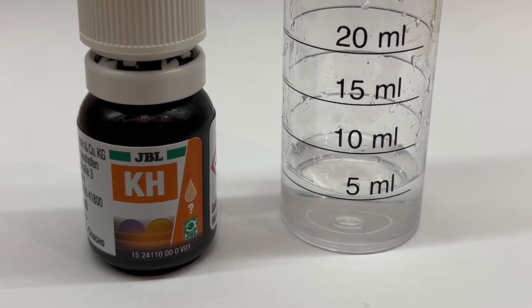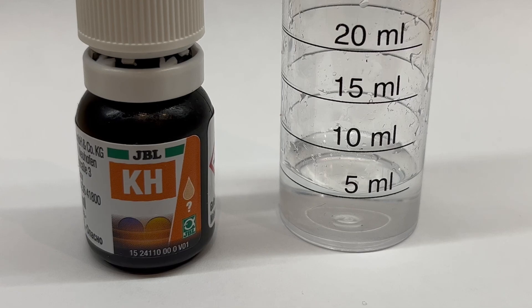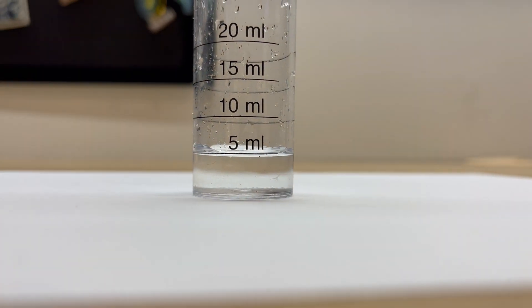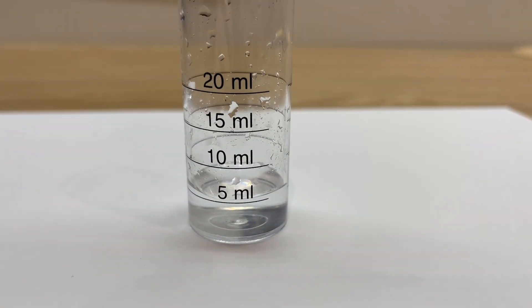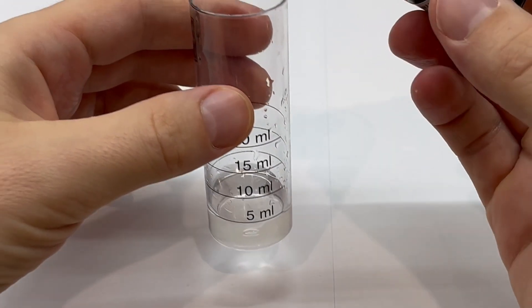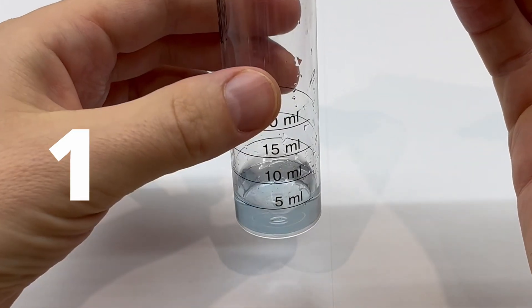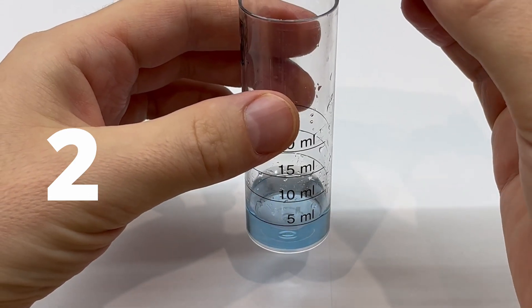Luckily, drop tests for KH and GH are easier than pH. Let's have a look. So to check the exact amount of KH in your water, what you have to do is take 5ml of water and put it into the measuring cup. Then you take measuring liquid and start putting drops into this cup. But this time you have to count every single drop. It will start from being blue and then you have to keep counting.